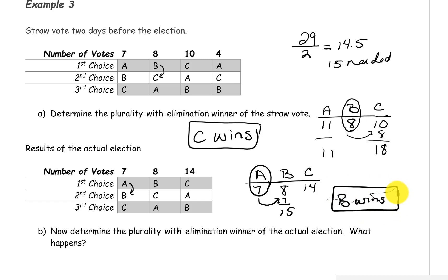So these four voters thought that they were going to be solidifying Candidate C's win of the election when in fact moving C up on their ballots causes C to now lose the election. This is a problem with using the plurality with elimination method.